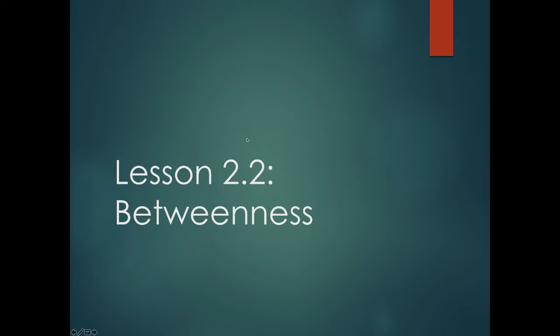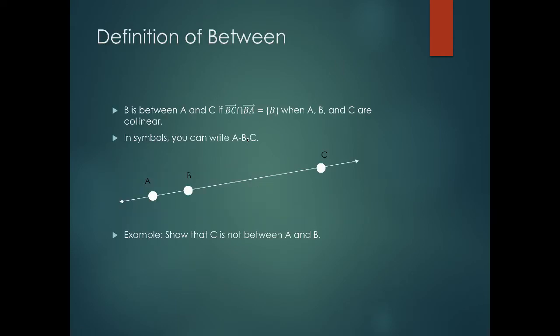In lesson 2.2, we're going to discuss the idea of betweenness. Here's the definition of between in geometry: B is between A and C if ray BC intersection ray BA equals B when A, B, and C are collinear.